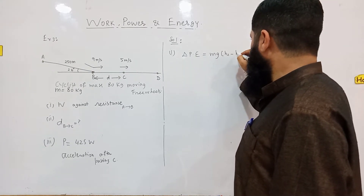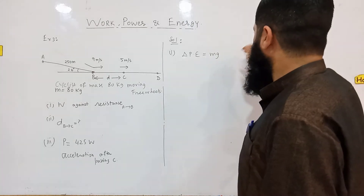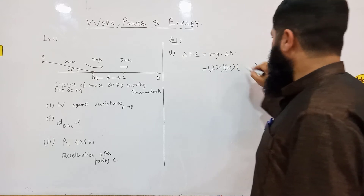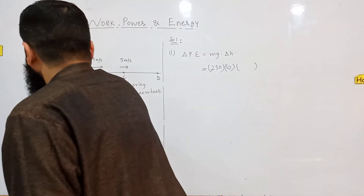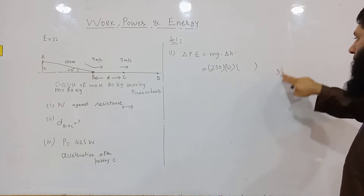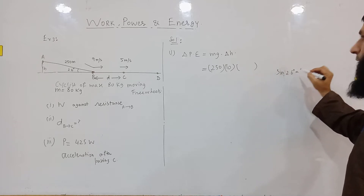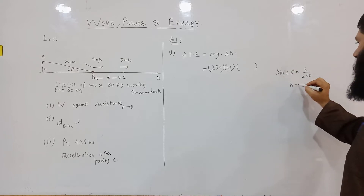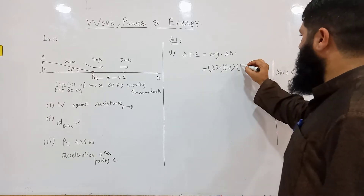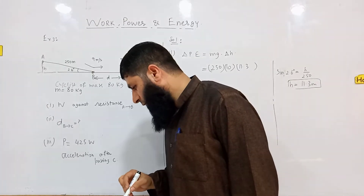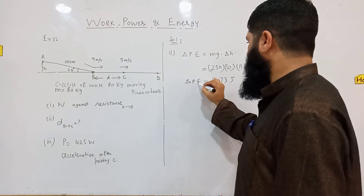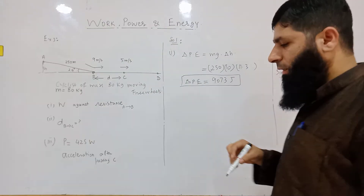The loss in potential energy equals m·g·Δh. Mass is 80, g is 10, and we find h using trigonometry: sin(2.6°) = h/250, so h equals 11.3 meters. Multiplying these three quantities — 80 × 10 × 11.3 — gives us the loss in potential energy: 9073 Joules. Similarly, we can calculate the gain in kinetic energy.